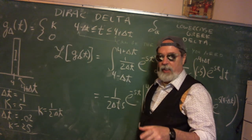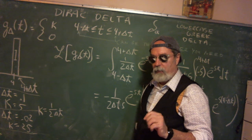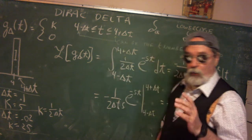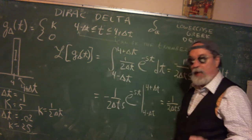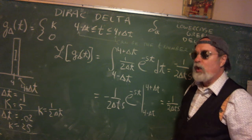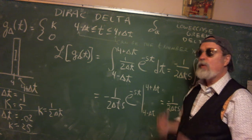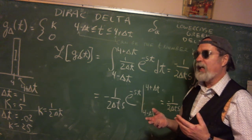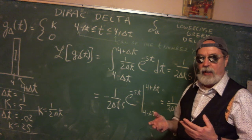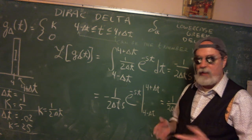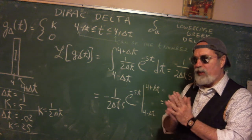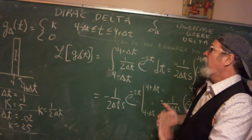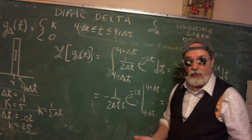The next thing that the Laplace transform can handle is a thing called the Dirac delta. Dirac was a French physicist, long dead, around at the time of development of quantum mechanics and atomic bomb theory — very influential mathematician-physicist, mostly physicist.